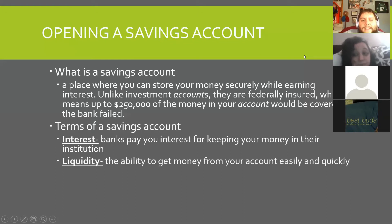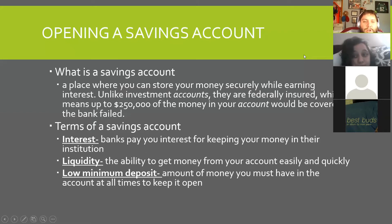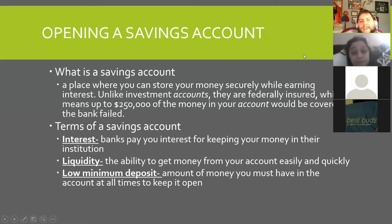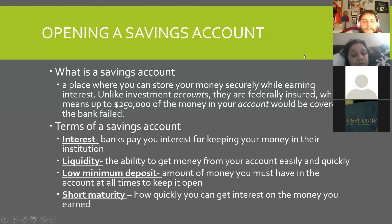Liquidity is the ability to get money from your account easily and quickly. Low minimum deposit is the amount of money you must have in your account at all times to keep it open. So when you set up a checking or savings account, they will tell you the restrictions — how much money needs to be in the account at all times. Maturity is how quickly you can get interest on the money you earned.